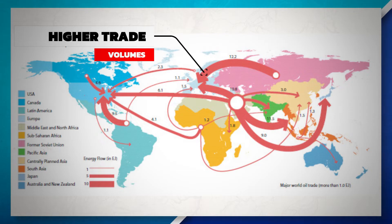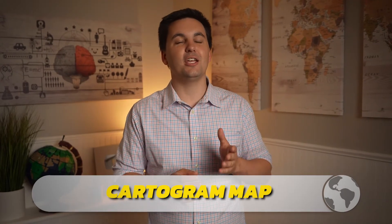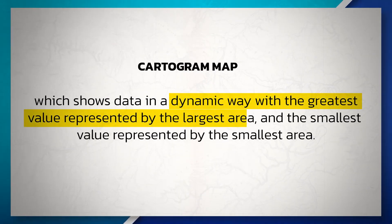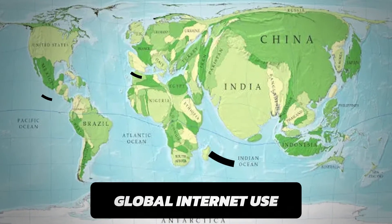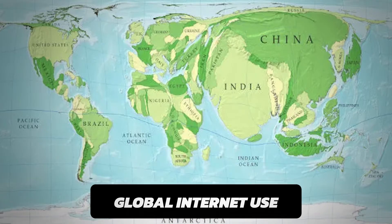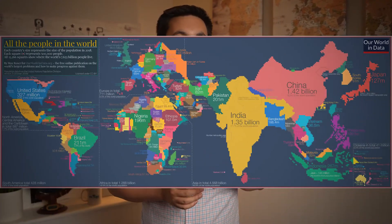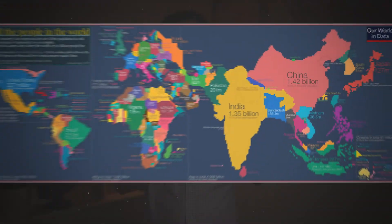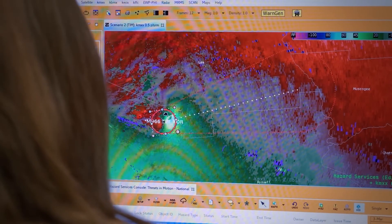The last map we are going to look at today is a cartogram map, which shows data in a dynamic way, with the greatest value represented by the largest area and the smallest value represented by the smallest area. The size or shape of a region is altered according to the specific variable being mapped. For instance, when displaying the population of countries around the world, we can see that China and India have a larger population compared to Brazil and Canada. Cartograms are excellent at illustrating data in a unique and visual way, but can be difficult to read as they heavily distort the geographic areas being displayed.